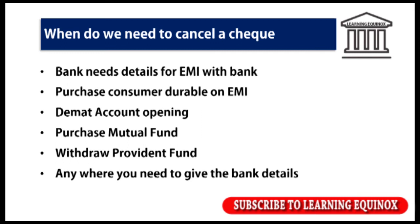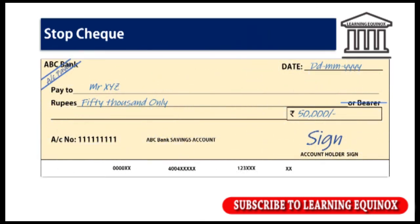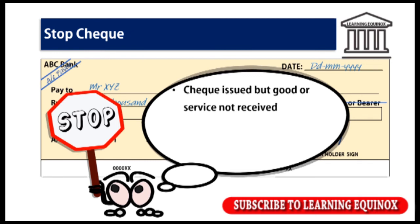So now let us move on to the next part, which is about a stop check. As you can see on the screen, a check that you have already issued — you can go ahead and stop that. But this stopping of a check can happen only before it is encashed. So what are such situations where you may want to stop a check? If you have to make a payment for some goods or service that you did not receive, in such a situation you may want to stop the payment.